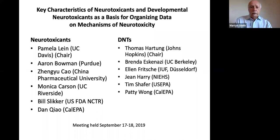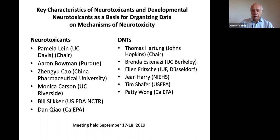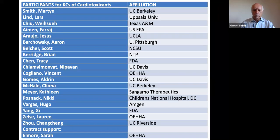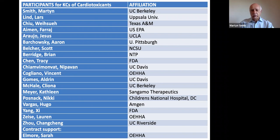We're currently writing a paper on neurotoxicants and developmental neurotoxicants — Pam Lein is leading that along with Thomas Hartung from Johns Hopkins. This has been disrupted somewhat by the COVID epidemic, but we're hoping the paper will be submitted soon, and leading journals have expressed interest in publishing it. We're also currently working on the key characteristics of cardiotoxicants by Zoom — a new experience of having 20 people on a call all talking — but it's going very well. We've broken people into subgroups and have some very experienced people in the cardiotoxicant field contributing greatly.